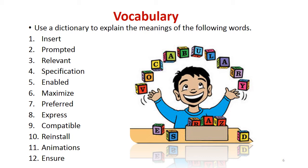The next section is vocabulary. There are 12 words in your textbook from the comprehension text. Refer to a dictionary and find meanings for these words. The words are: insert, prompted, relevant, specification, enabled, maximize, preferred, express, compatible, reinstall, animations, and ensure. You need to find the meanings and also study the spellings of these words.